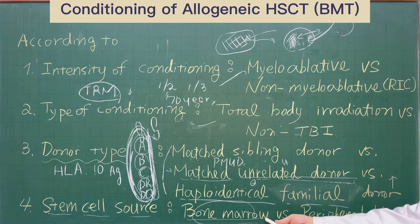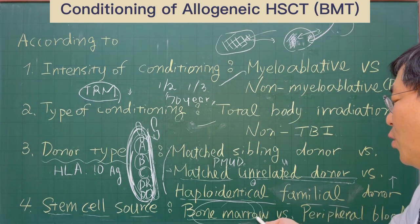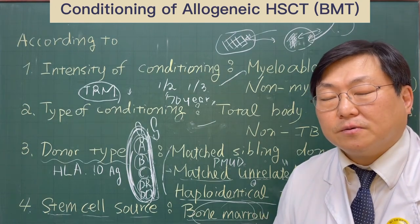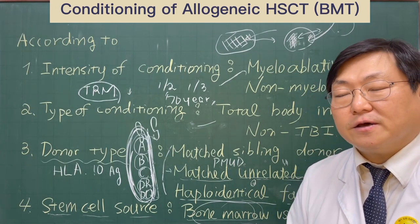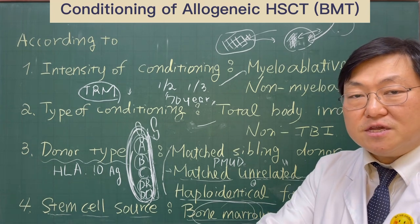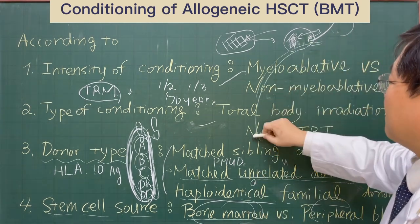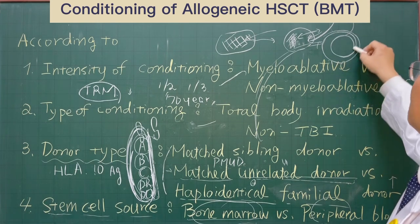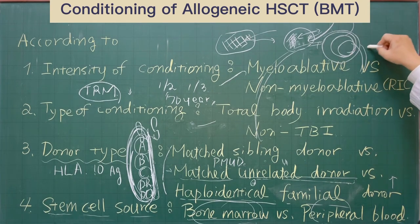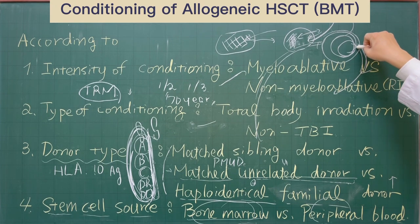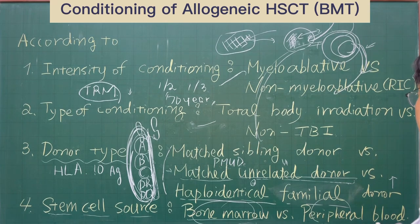So instead of getting stem cells from the bone marrow, we usually use peripheral blood stem cells from the peripheral body of the donors. When the donor is available, they can donate their blood stem cells using a catheter from their peripheral vein. The blood from the peripheral blood will be circulated through a machine, and the machine collects the stem cells and gives back the other cells to the donor. Using this method, we can achieve peripheral blood stem cells in a very successful way.